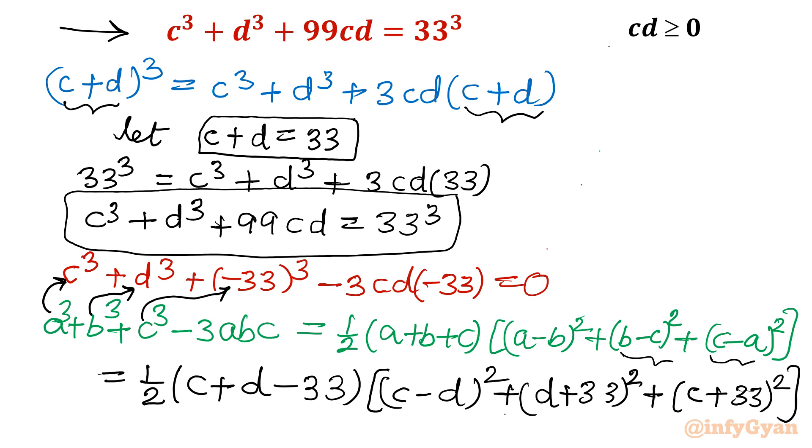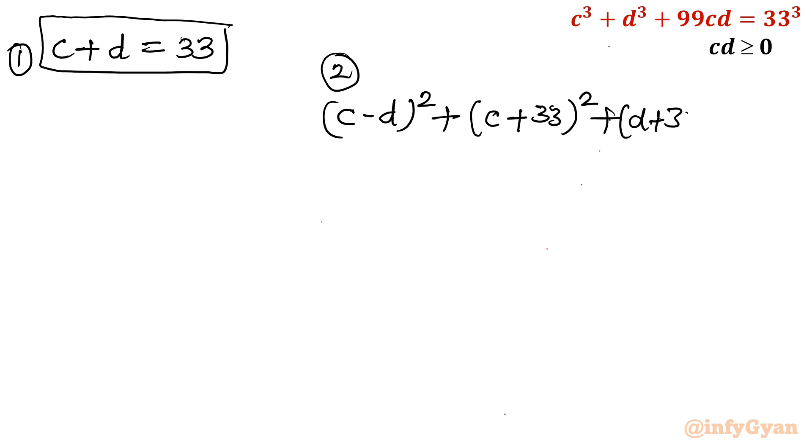Now right hand side is 0. So I will put equal to 0. So product of two brackets equal to 0. So either C + D - 33 will be 0, or this sum of three squares will be 0. So I can write first one, C + D = 33. This is our equation number 1. Equation number 2, I will write (C - D)² + (C + 33)² + (D + 33)² equal to 0.